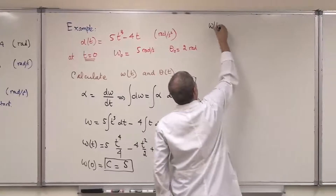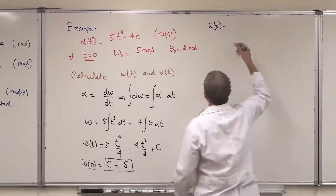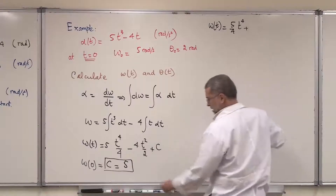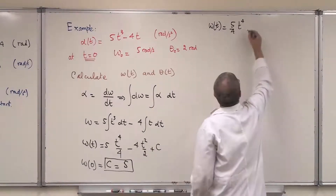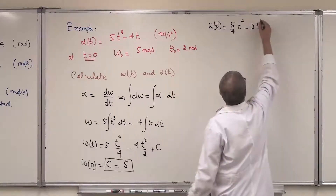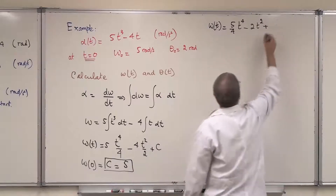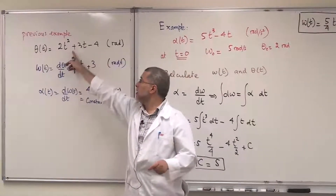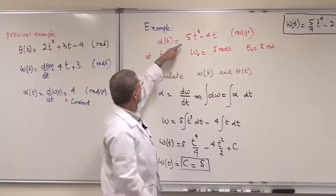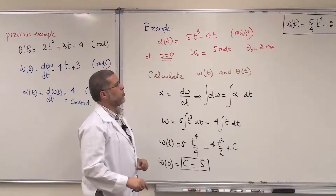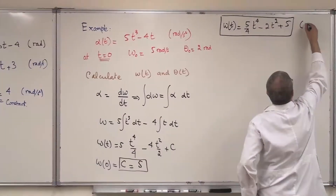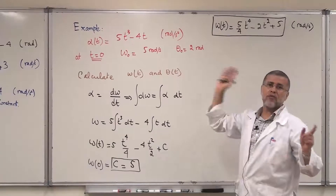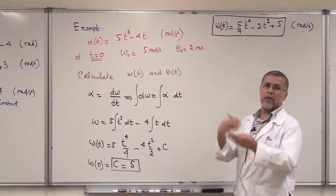So ω(t) = (5/4)t⁴ − 2t² + 5, in radians per second. At t = 0 this gives ω = 5, confirming our initial condition. At t = 1 second you substitute t = 1 to find the new angular velocity. This shows ω is changing with time.